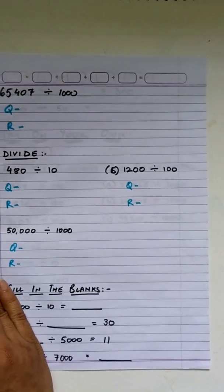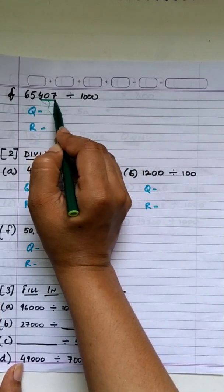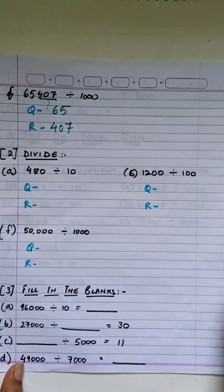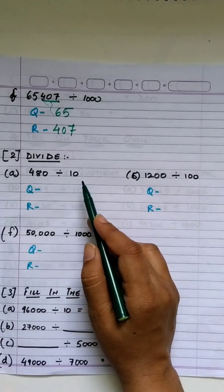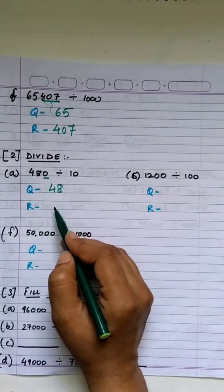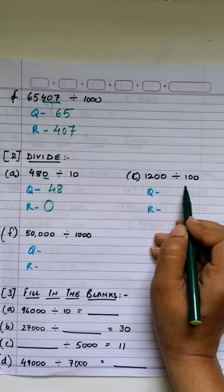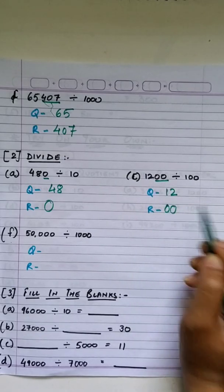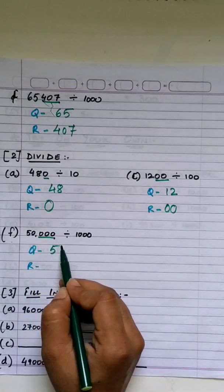Let's try F1: 65,407 divided by 1,000. Hide the last three digits — quotient is 65 and remainder is 407. Next: 480 divided by 10 — hide the last digit; remaining digits are the quotient, hidden digit is the remainder. Now 1,200 divided by 100 — two zeros, hide two digits, quotient is 12, remainder is 00. And 50,000 divided by 1,000 — hide three digits, quotient is 50, remainder is 000.